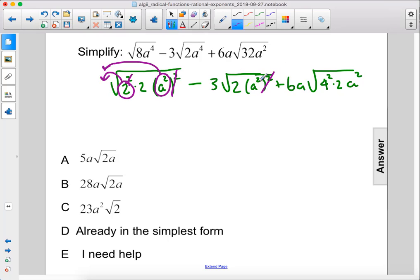Here we can cancel out that squared and move this a squared out front. Here we can cancel out that squared and move this 4 out front and we have a squared here so we can cancel that squared and move an a out front. All right and there's already an a out there.